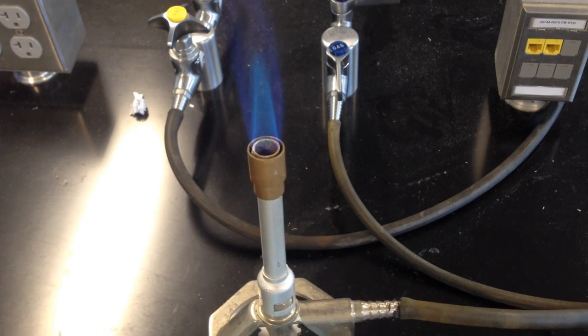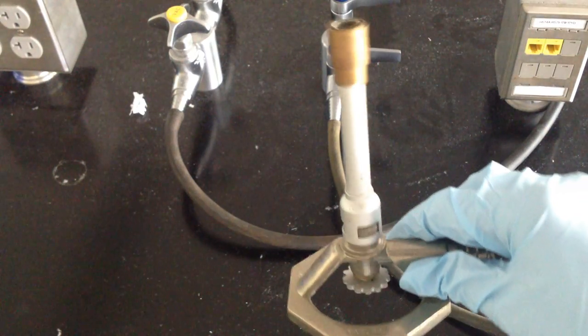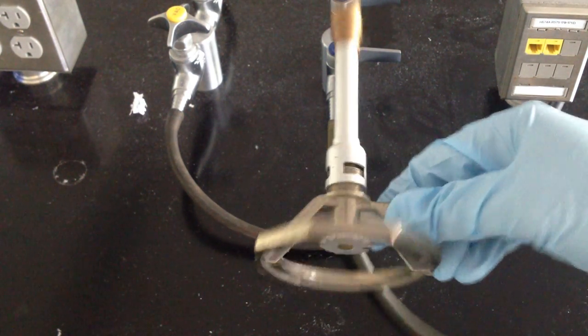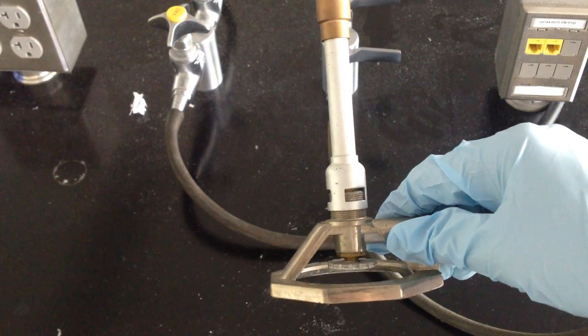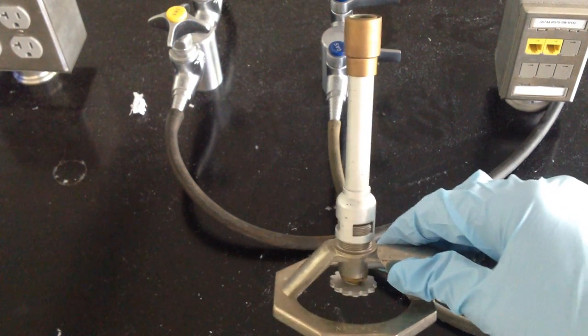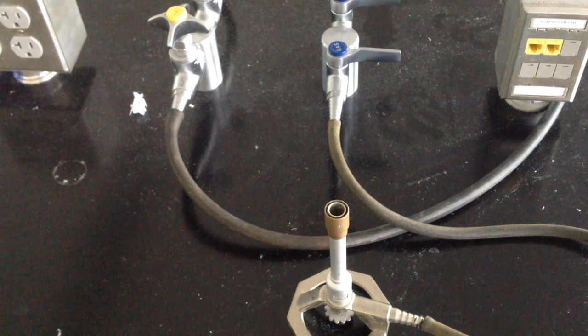To turn off the Bunsen burner, all you need to do is turn the gas off. And once you've got your valves in a place that you like, again, about a full turn on the bottom and about halfway up on the neck, then you can leave it this way and simply connect it up, turn the gas on, and light with the striker in future labs.